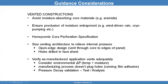For vented constructions, we want to avoid moisture-absorbing core materials and ensure preclusion of moisture entrapment. We want a good honeycomb core perforation specification. We want to make sure the venting architecture can reduce the internal pressure — this includes open edge designs and holes drilled in the face sheet. We want to verify the as-manufactured application vents adequately, considering environments and how fast it needs to vent out. We want to ensure manufacturing processes do not plug holes, and that testing and analysis validate the pressure decay.